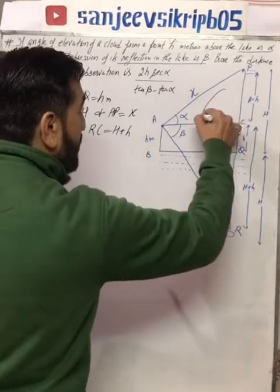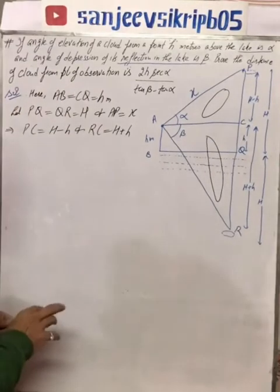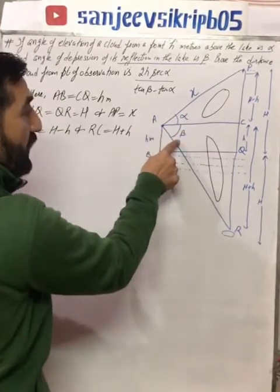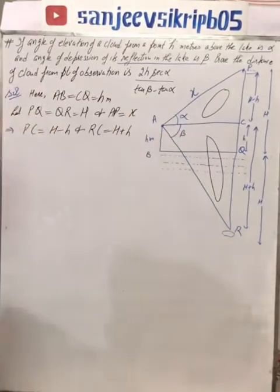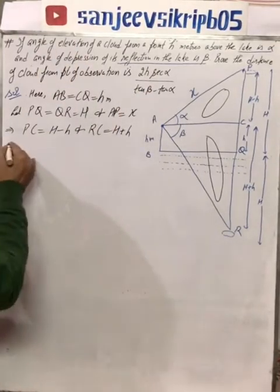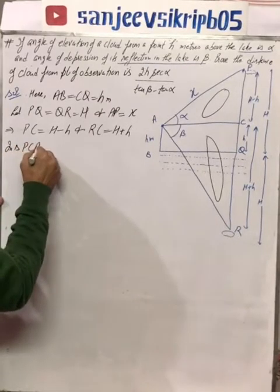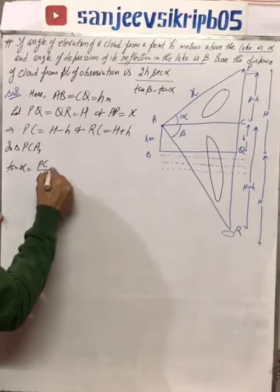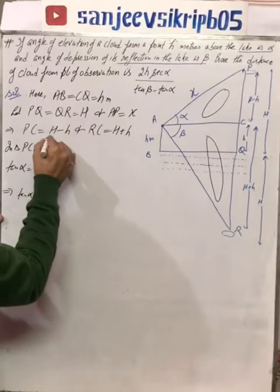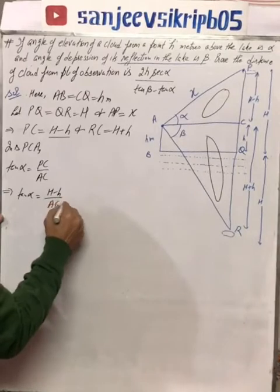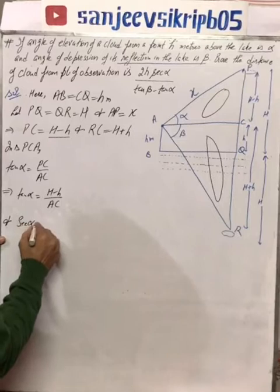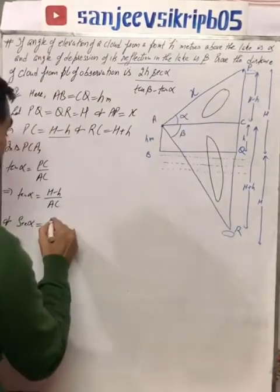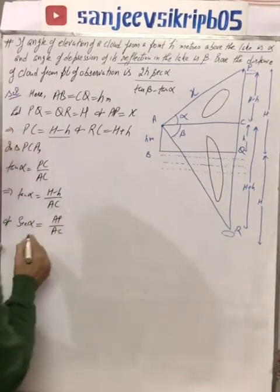In triangle PCA, if we apply angle alpha, we get tan alpha and sec alpha. Tan alpha equals perpendicular over base, which is (H minus h) over AC. Sec alpha equals hypotenuse over base, which is AP over AC — and AP we have written as x, while AC remains as is.